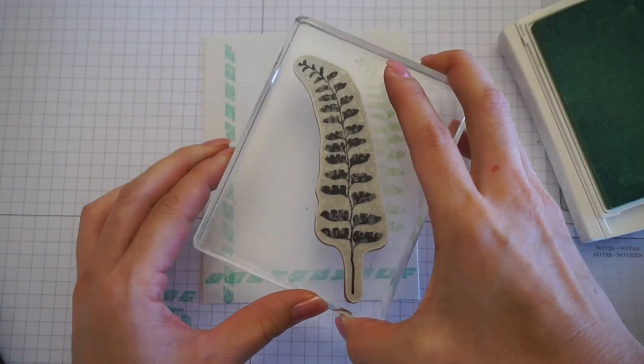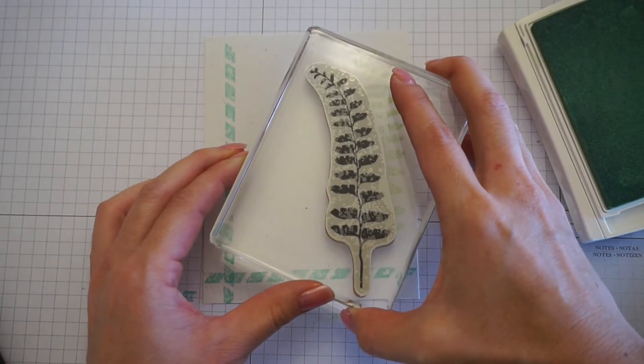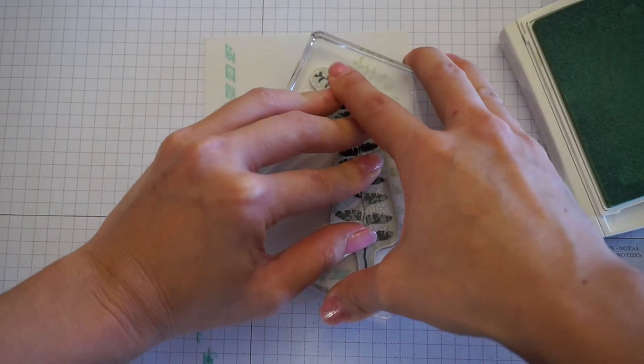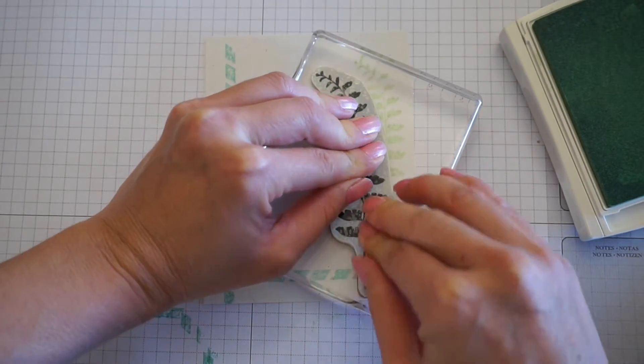Give it a good press and then this you want to stamp twice. Move it to the left and it'll just give it that light, faint image.